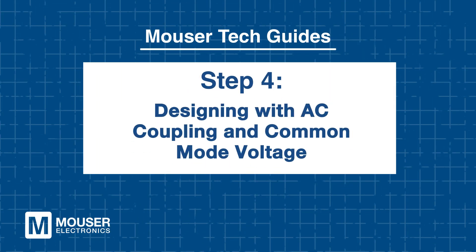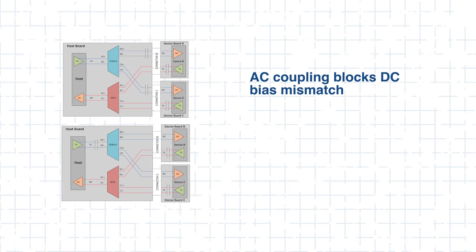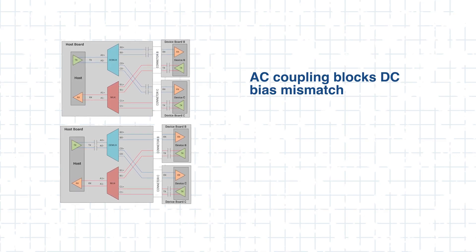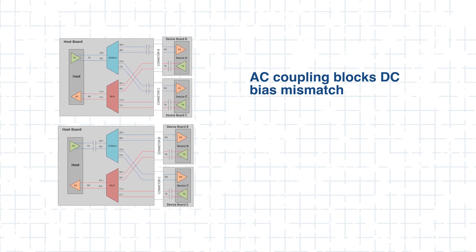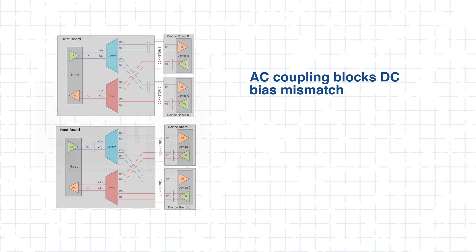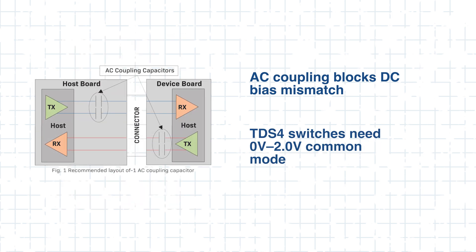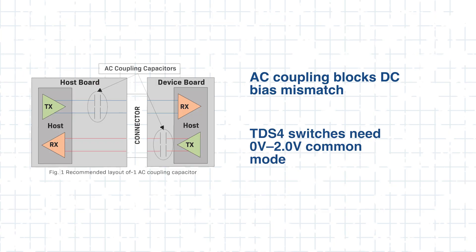Next, let's go over AC coupling. Step 4: Designing with AC coupling and common mode voltage constraints. In high-speed differential signaling, AC coupling capacitors are often used to block DC bias mismatches between transmitters and receivers. However, when incorporating passive bus switches like Toshiba's TDS4 series, it's critical to ensure the switch operates within its required common mode voltage range of 0 volts to 2 volts. The placement of AC coupling capacitors determines how this bias is established.